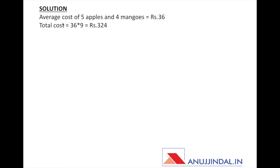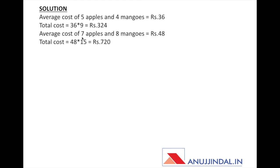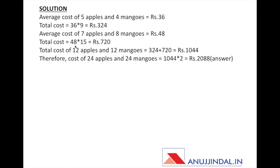The average cost of 5 apples and 4 mangoes is 36 rupees. Since there are 9 fruits total, the total cost is 36 times 9, which equals 324 rupees. Similarly, the average cost of 7 apples and 8 mangoes is 48 rupees. There are 15 fruits total, so the total cost is 48 times 15, which equals 720 rupees. Now, 5 apples plus 7 apples equals 12 apples, and 4 mangoes plus 8 mangoes equals 12 mangoes.